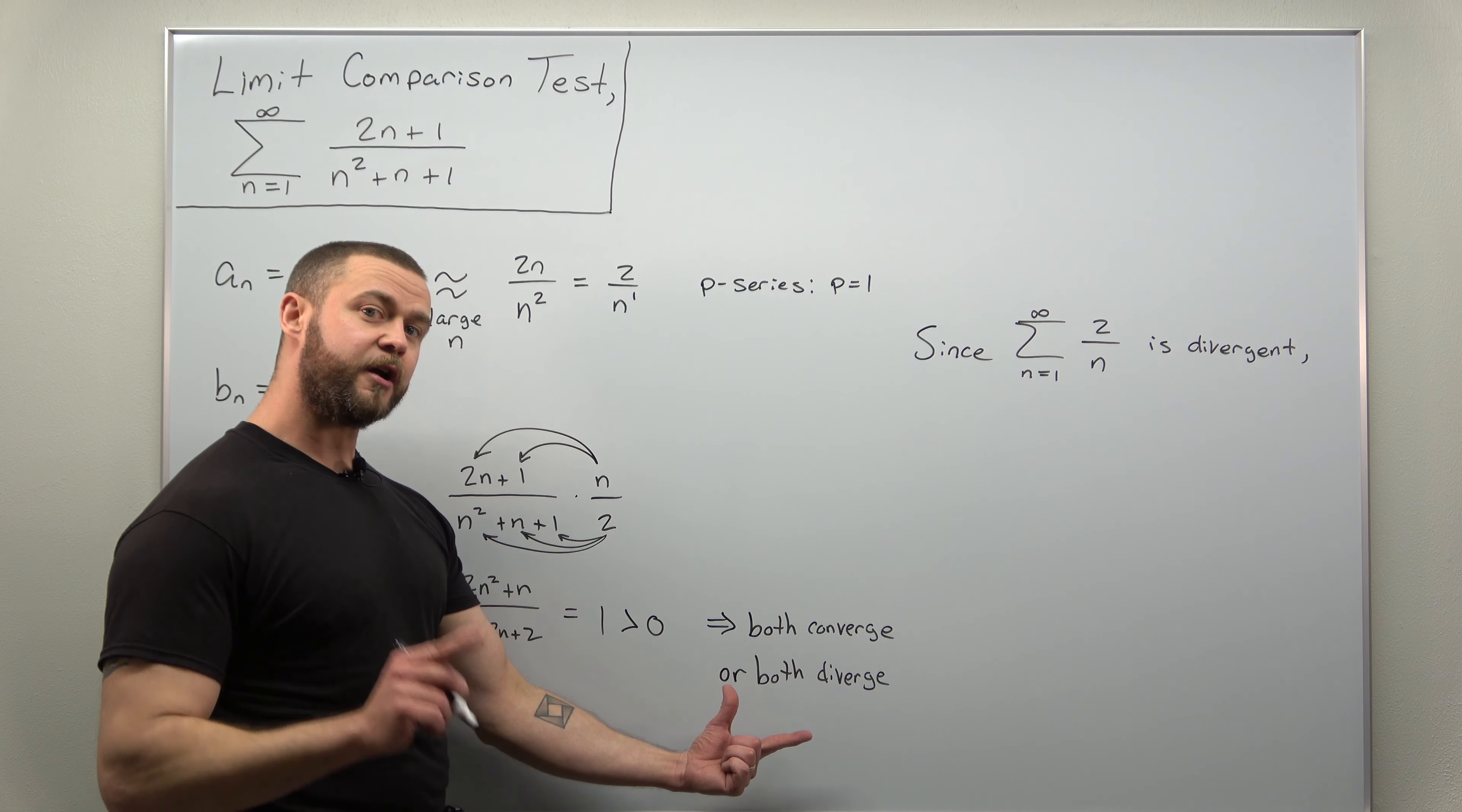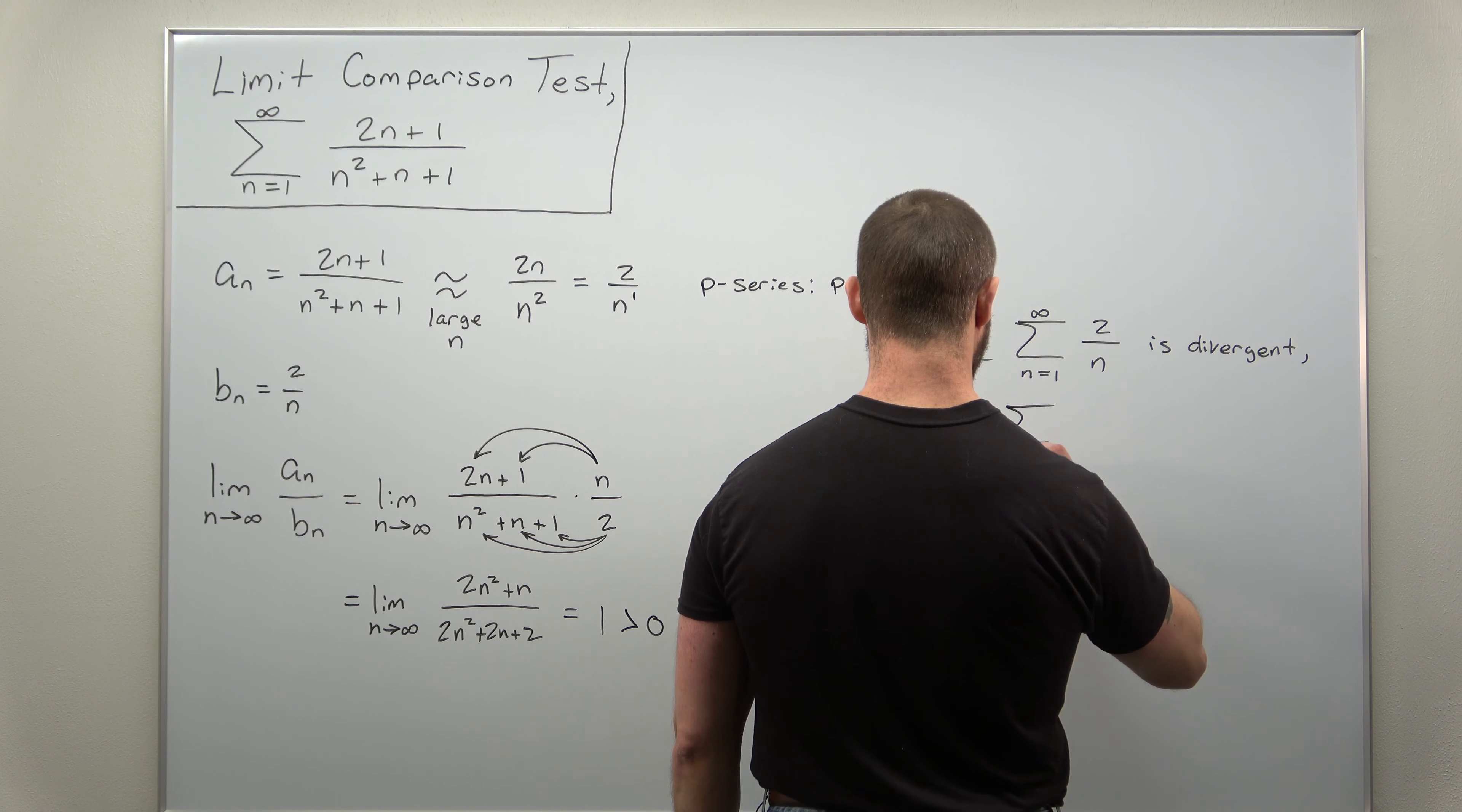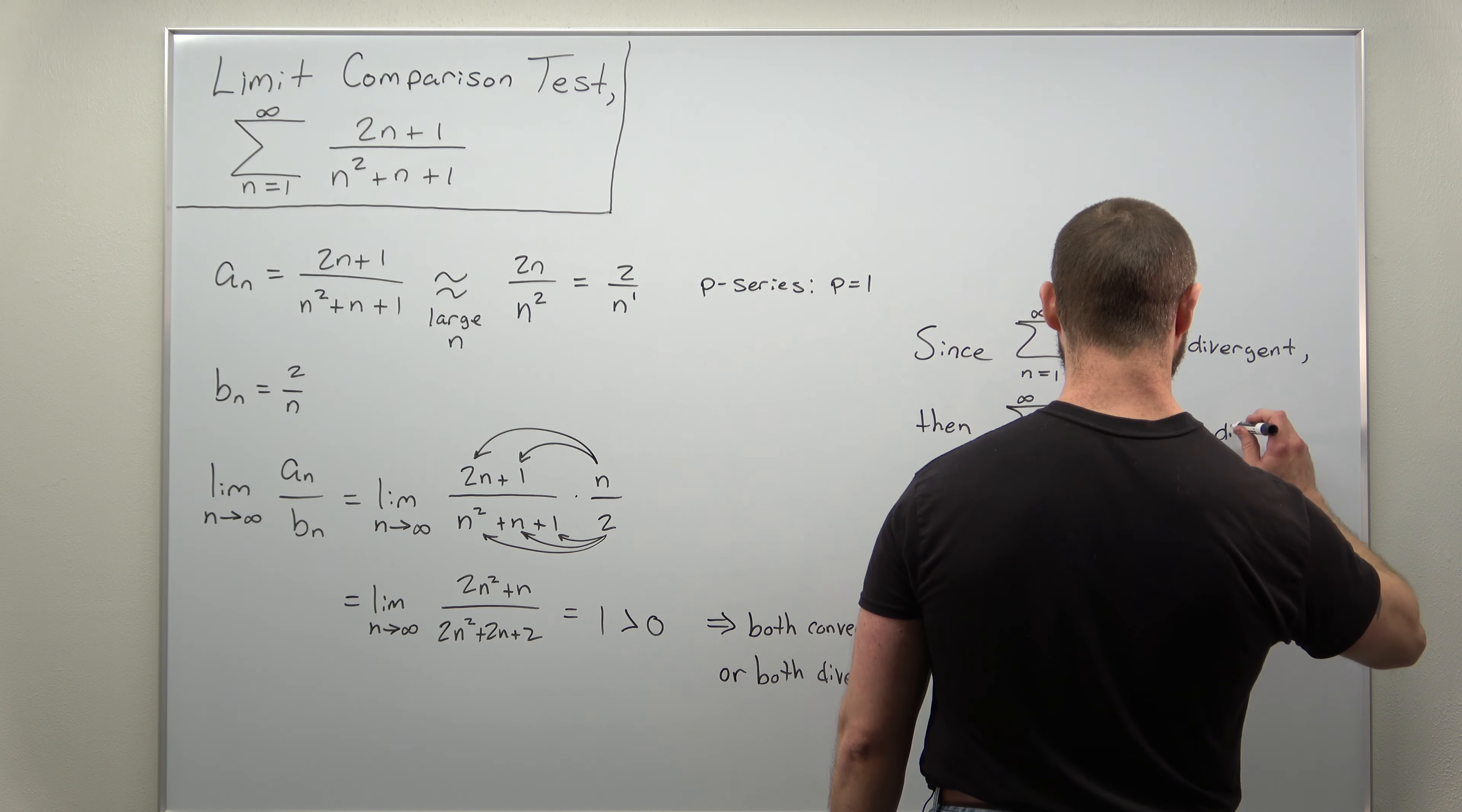Again, the conclusion here, both infinite series either converge or both diverge. So we just write this, the conclusion is then our infinite series, that is divergent.